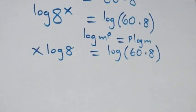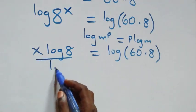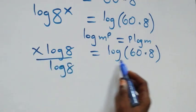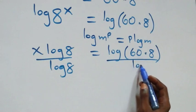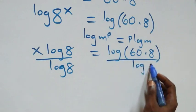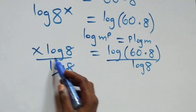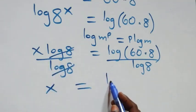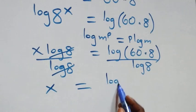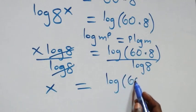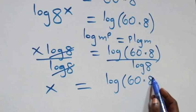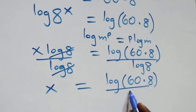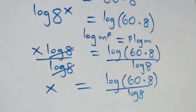Next step: we divide both sides by log 8. On this side divide by log 8, and also divide this side by log 8. Log 8 and log 8 cancel each other, and we have x left, which is equal to log(60 times 8) over log 8.